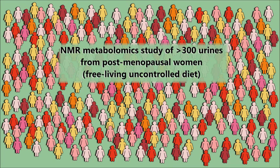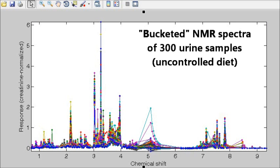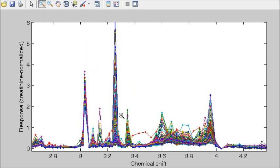In recent work we analysed samples from 300 post-menopausal women. The complete set of bucketed NMR spectra is shown here. The response in each bucket represents the integrated normalised area of a peak or peaks in the original raw spectrum arising from a single chemical species or metabolite.